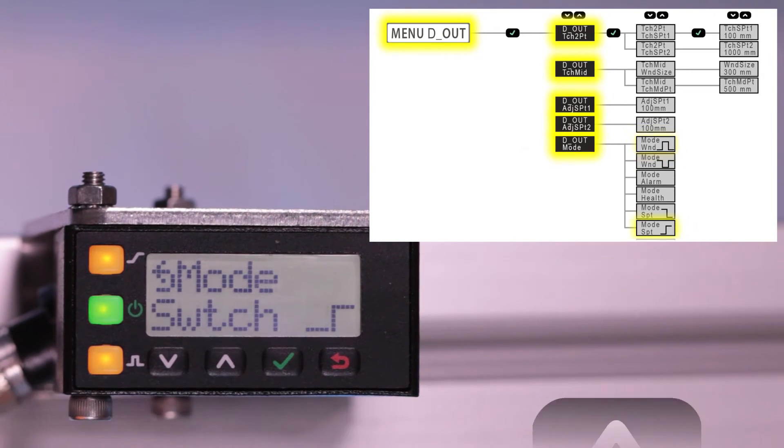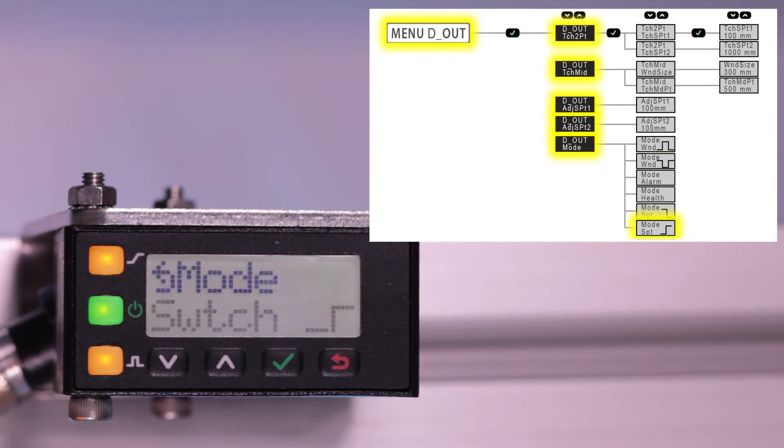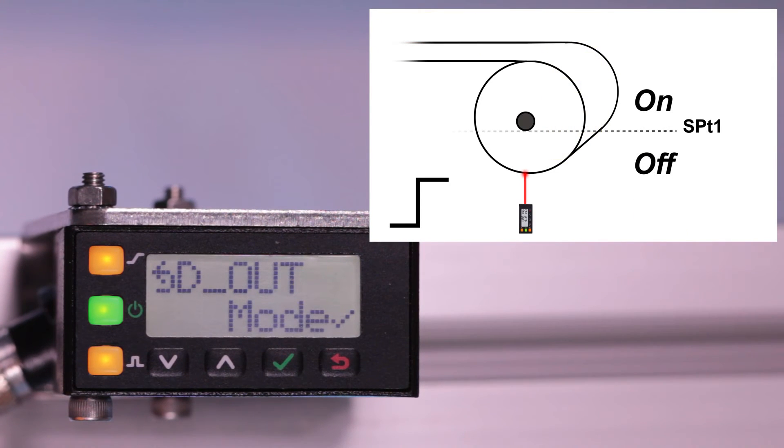Click up to cycle through the different mode options until getting to the normally open switch point option and click enter to save this setting. The discrete output now has a single switch point set at 100.